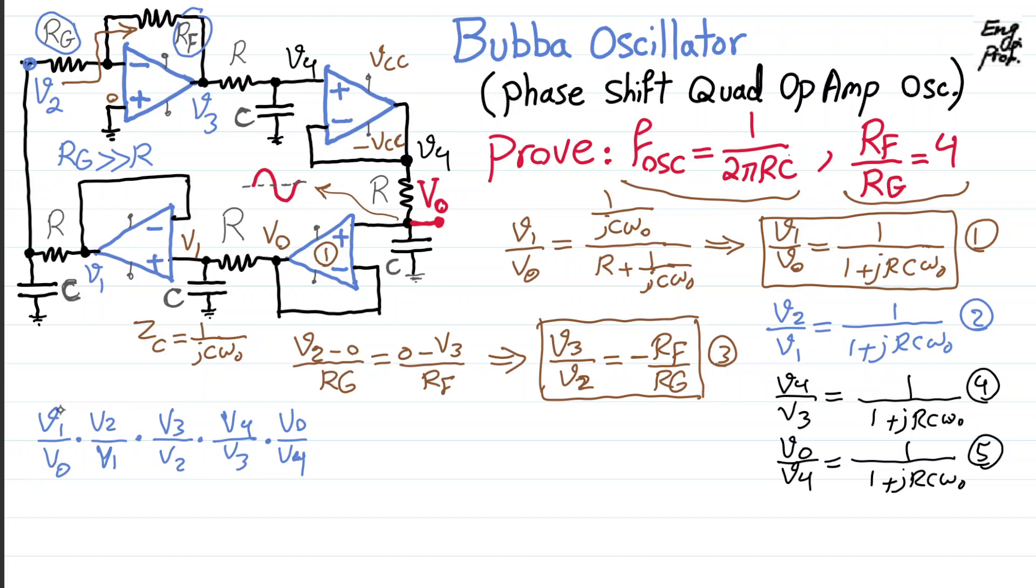And you can see that obviously what we expected is V_out cancel out. V1 cancel out V1, V2 cancel out V2, V3 cancel out V3, V4 cancel out V4, and finally V_out cancel out V_out.